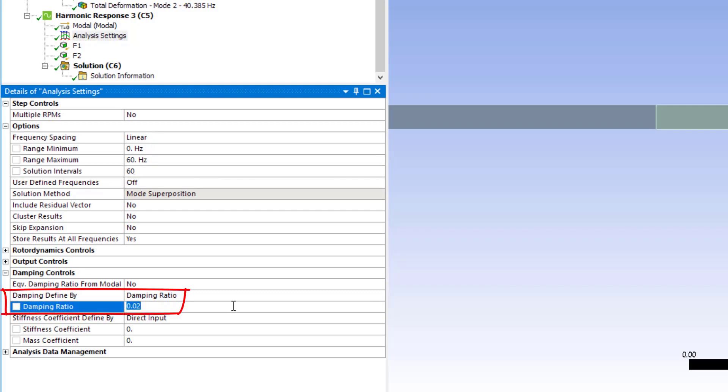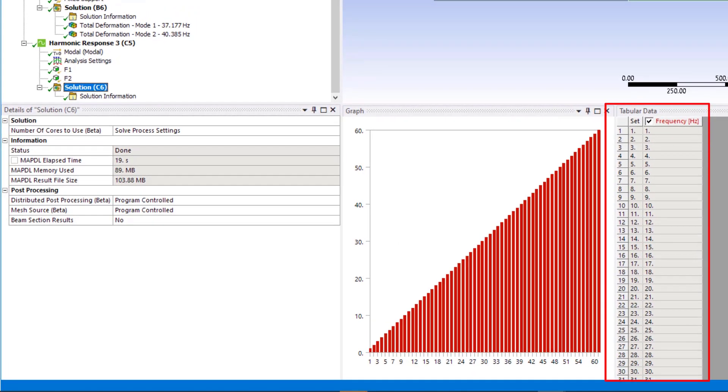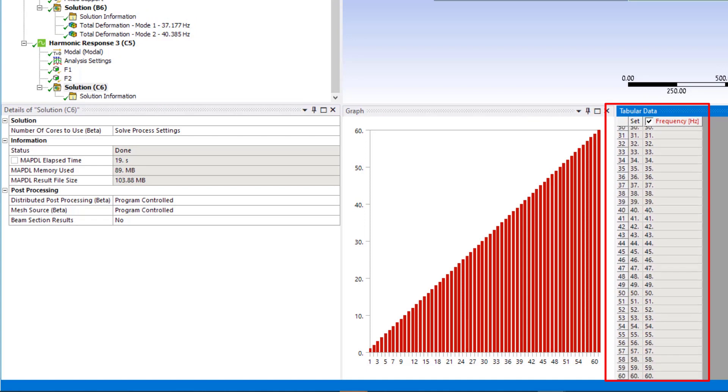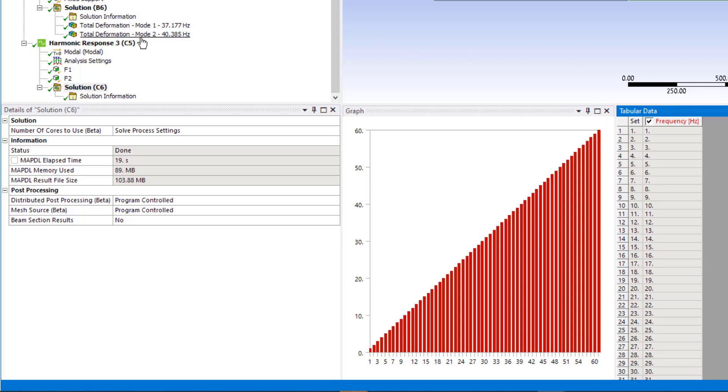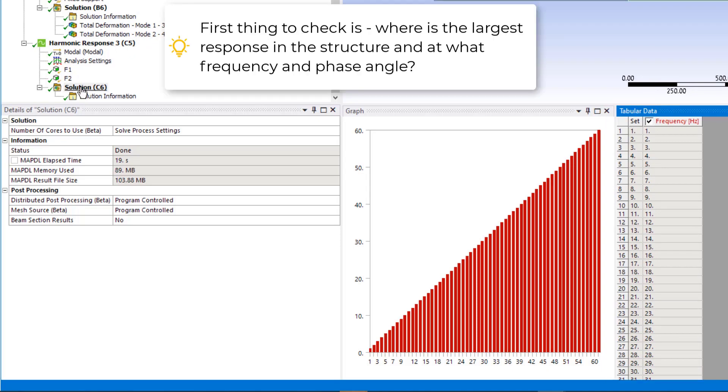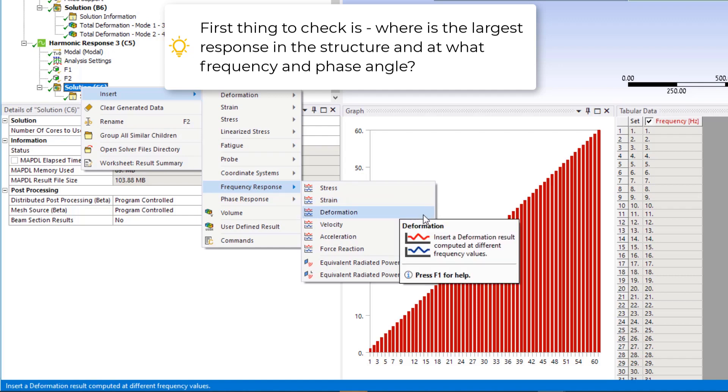A damping ratio for the system is defined as 0.02. It is important to understand that with a completed harmonic solution, we have result sets over many frequencies and results at each frequency can change with respect to phase angle. In reviewing harmonic results, then the first order of business is to ascertain where in the structure is the largest response occurring and at what frequency and phase angle.